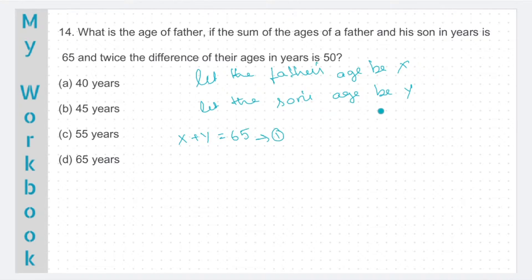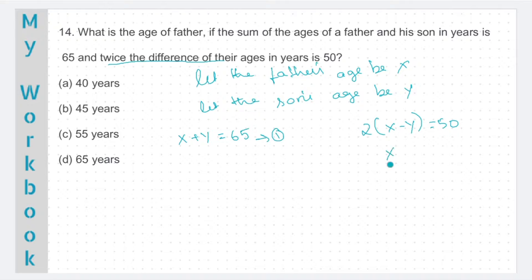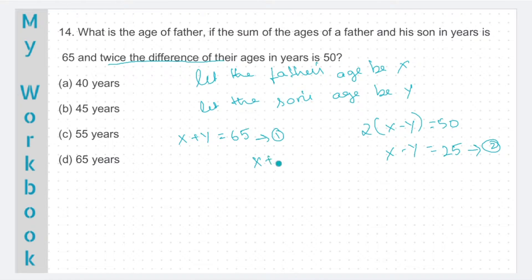We need one more equation. For that, let's use this statement: twice the difference of their ages is 50. So x minus y will be 50 by 2, which gives you 25. This is our second equation. We need to solve both. For solving, you can use either elimination or substitution method, whichever you are comfortable with. I prefer elimination method.